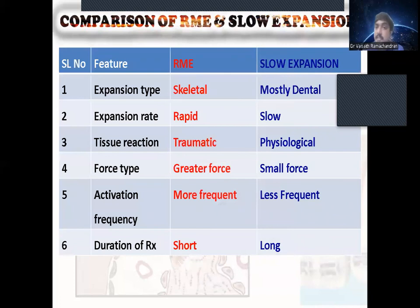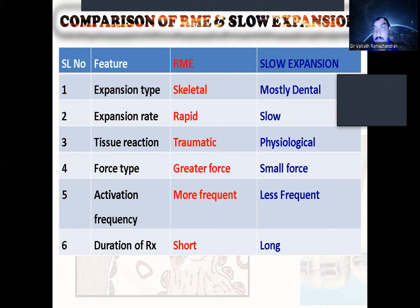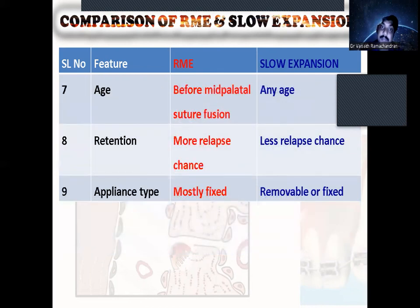Here is the comparison of RME and slow expansion. Expansion type: RME is skeletal; slow expansion is mostly dental. Expansion rate: RME is rapid; slow expansion is slow. Tissue reaction: RME is traumatic; slow expansion is orderly. Force type: greater force is needed for RME; smaller force for slow expansion. Activation frequency: more frequent activation is needed for RME every day, while slow expansion needs only periodic activation. Treatment duration is short for RME and long for slow expansion. Age: RME is used mainly before mid-palatal suture fusion; slow expansion can be used at any age. Retention: more relapse tendency with RME, less with slow expansion.